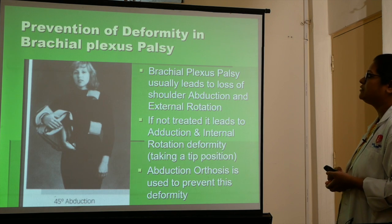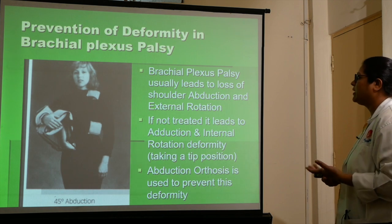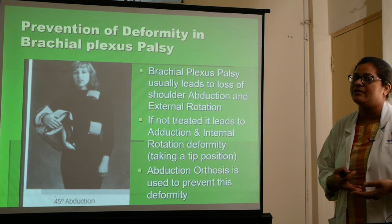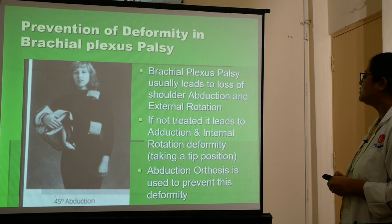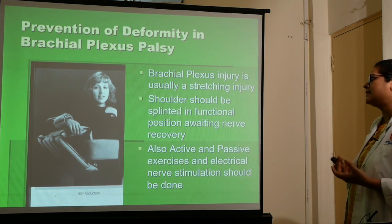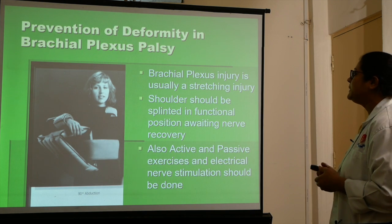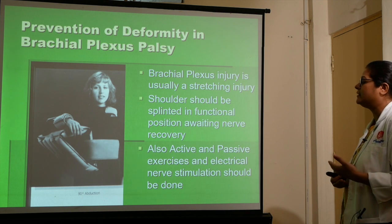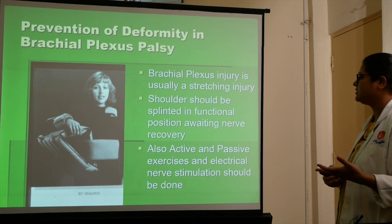Prevention of deformity in brachial plexus palsy: brachial plexus palsy usually leads to loss of shoulder abduction and external rotation, and if not treated it leads to adduction and internal rotation deformity. Abduction orthosis is used to prevent this deformity. Brachial plexus injury is usually a stretching injury occurring when a person falls on an overstretched hand. The shoulder should be splinted in a functional position while awaiting nerve recovery. Active and passive exercises and electrical nerve stimulation should also be done.